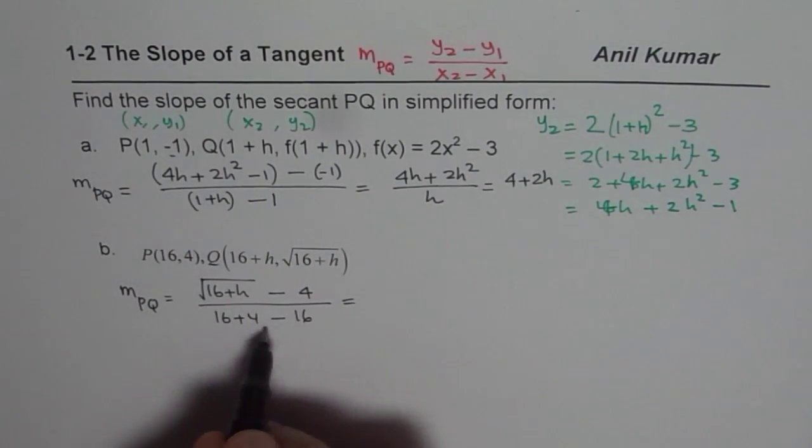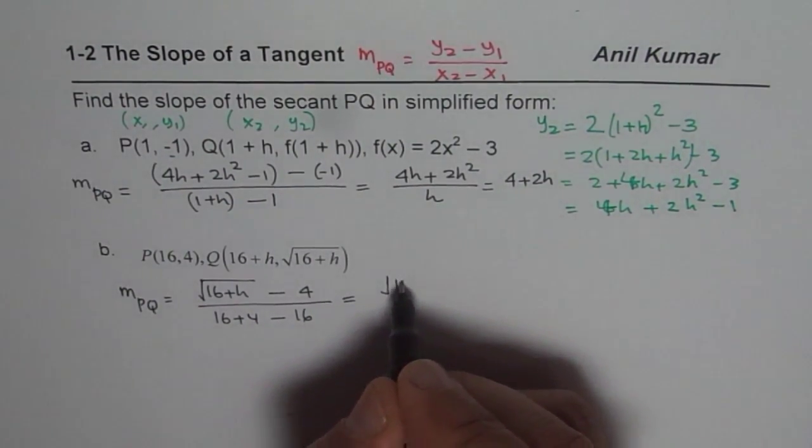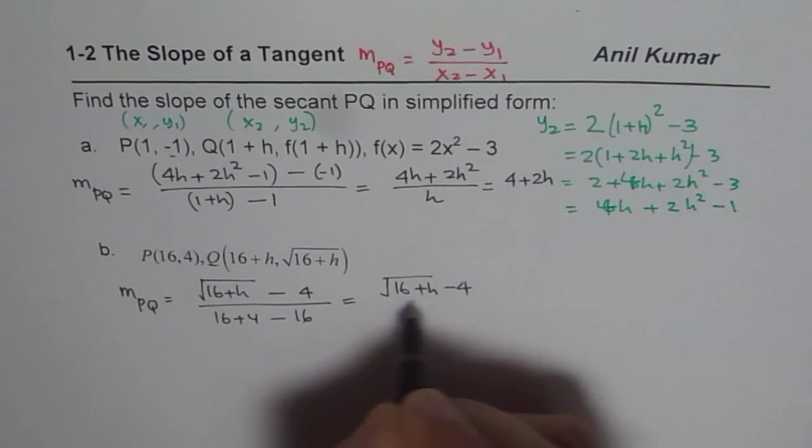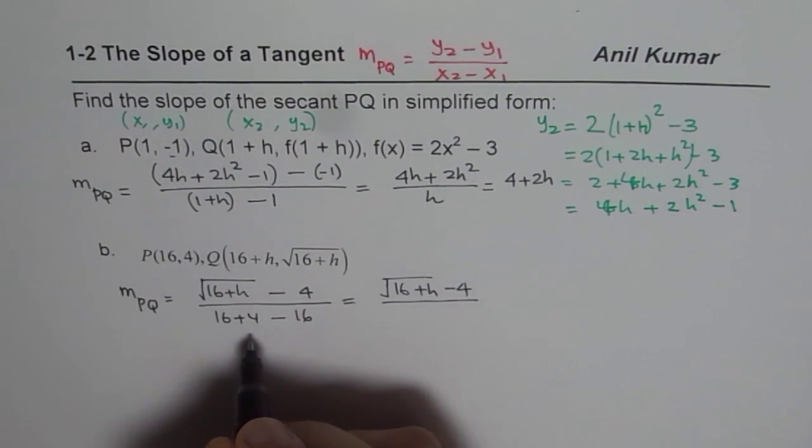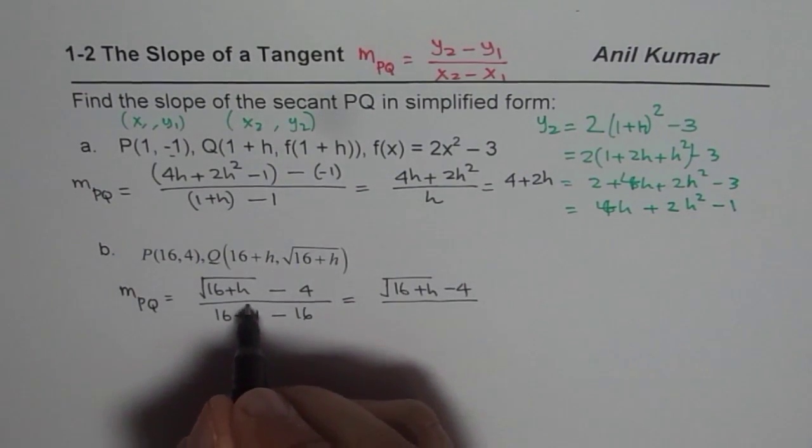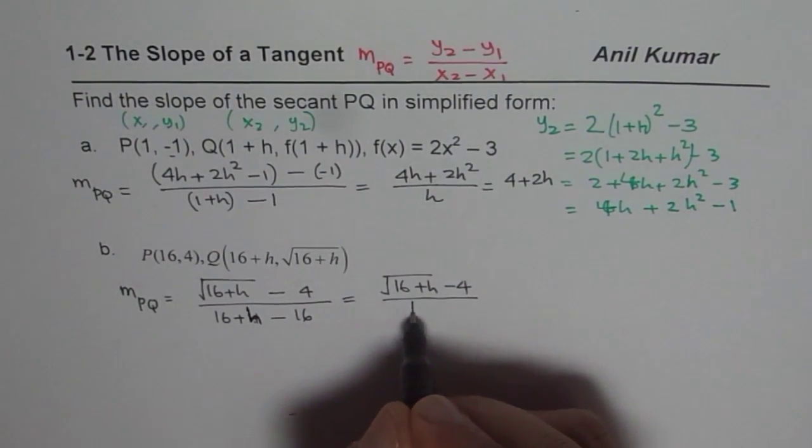Now that simplifies to, let me write that first, √(16+h) minus 4, and the denominator we get is, okay this was 16+h, I wrote wrong, 16+h, so it is h.